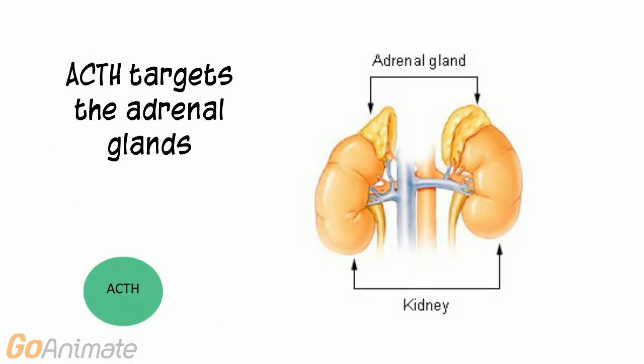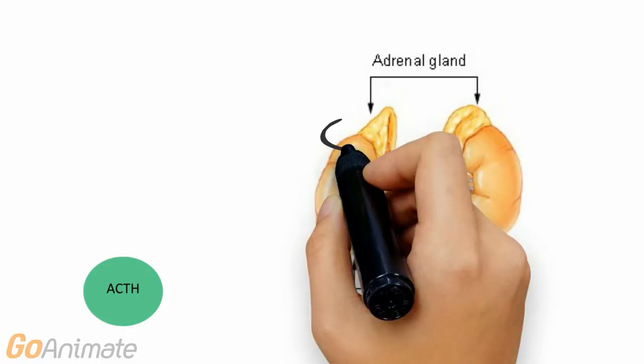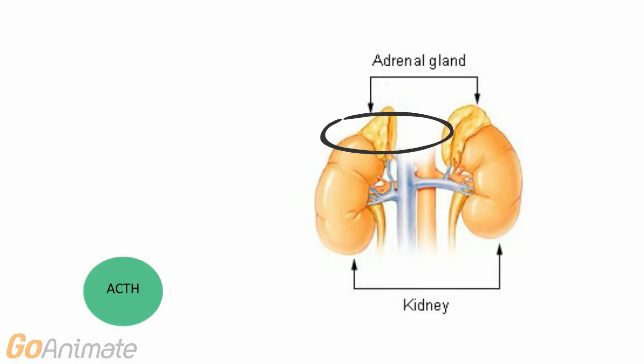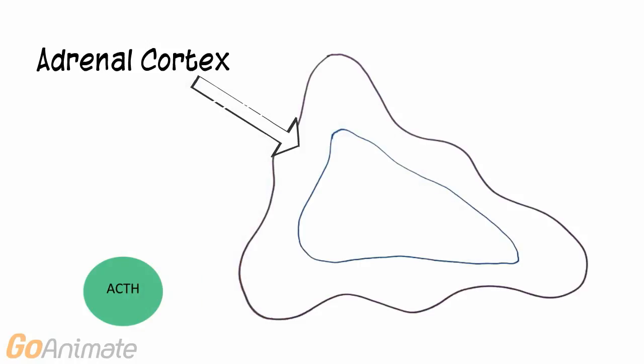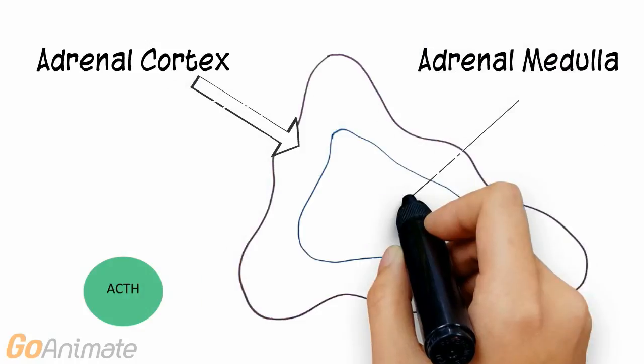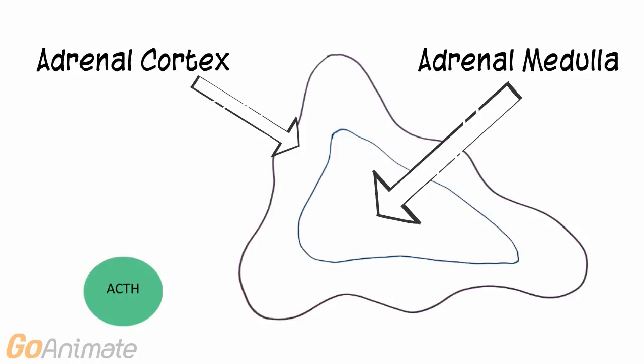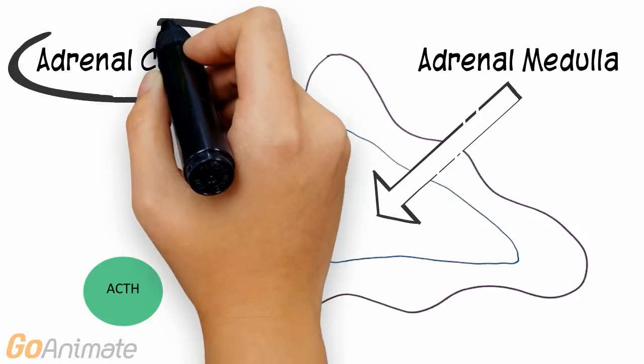ACTH targets the adrenal glands. The adrenal glands are located on top of each kidney. The adrenal glands have two main parts, an outer cortex and an inner medulla. Both parts secrete different types of hormones.